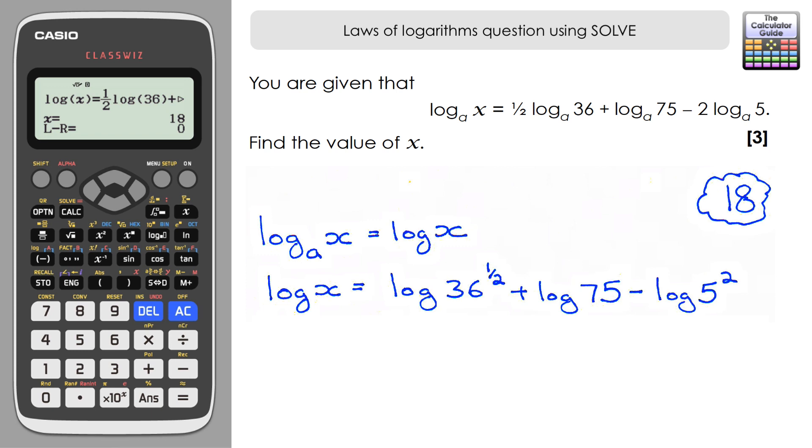On my next line I'm going to write out what the results are. Log of 36 to the power of 1/2 - power of 1/2 is the square root of 36, which is 6 - so that's log of 6 plus log of 75, minus log of 5 squared, which is 25, so log of 25. I need to use further laws of logarithms to combine these logarithms. If I am adding logarithms then I can multiply the values within, or if I'm subtracting then I can divide the values within.